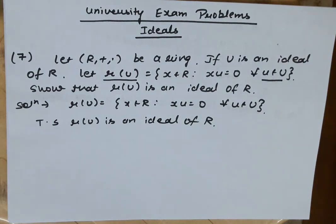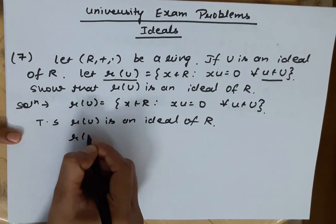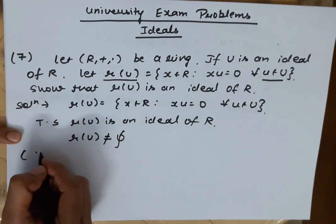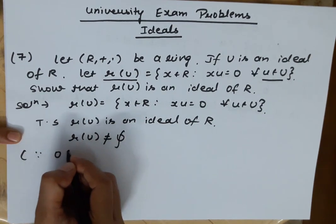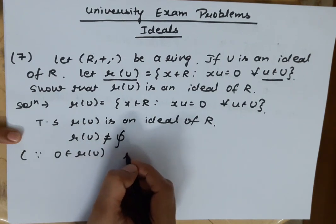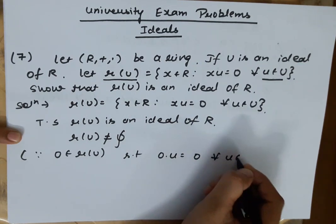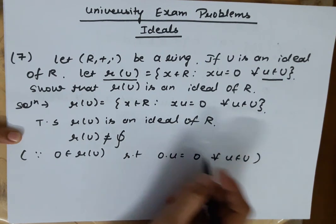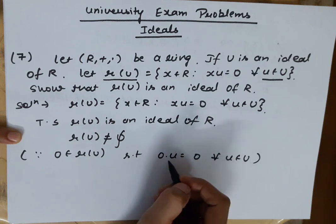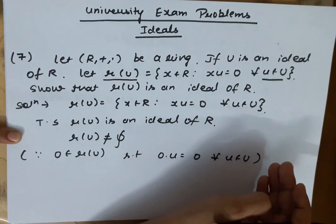Now, if we have to prove that any subset is an ideal of R, we first check that it is non-empty. R(U) is non-empty because 0 belongs to R(U), since 0·u = 0 for all u belonging to U.